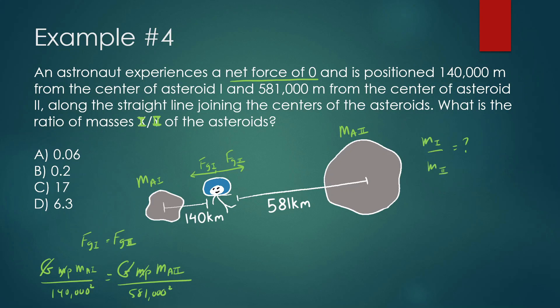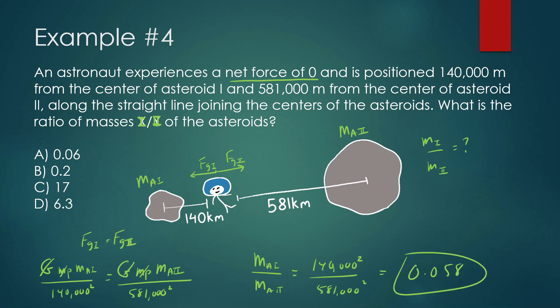Rearranging, mass of asteroid one divided by mass of asteroid two equals 140,000² divided by 581,000², which gives approximately 0.058.